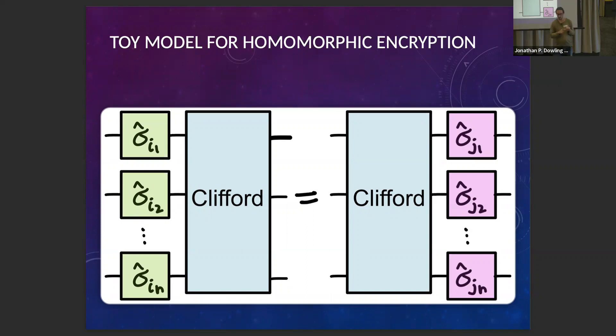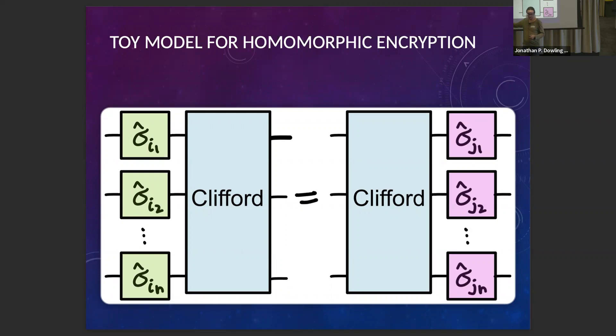This type of encryption isn't really available to us classically — homomorphic encryption has been described for classical computing but has very significant overheads. There's a further generalization called blind quantum computing, where the client encrypts both the data and the algorithm itself. The client can upload an encrypted data set and encrypted description of the algorithm, and Bob is able to execute all of that without learning anything about the algorithm or the data. There's actually a no-go proof in the classical context that you can't do this, so this is a uniquely quantum type of encryption.